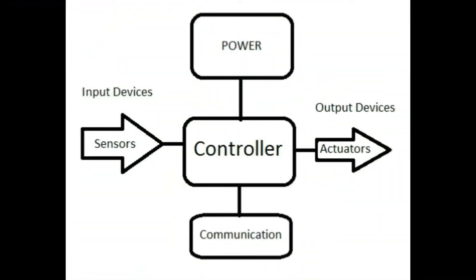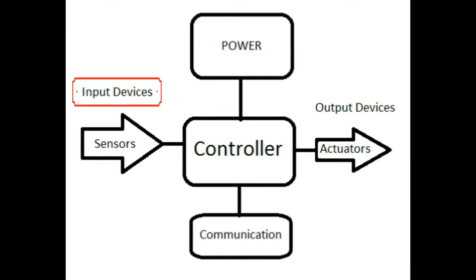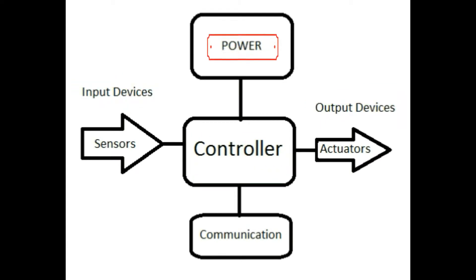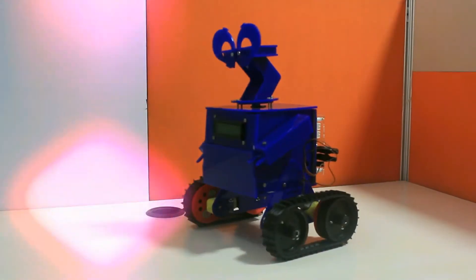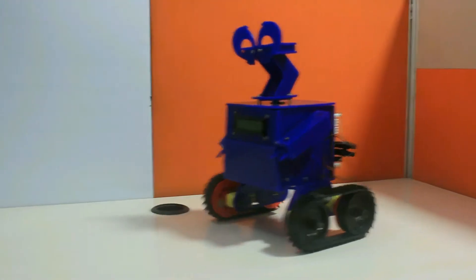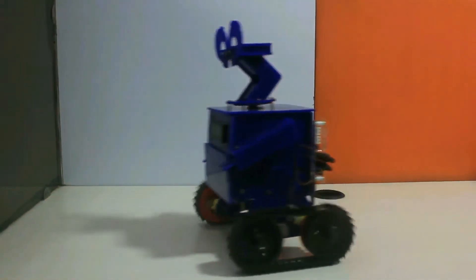The typical parts of a robotics system can be described using a block diagram: Controller, Input devices, Output devices, Power, and Communication. With the advent of the internet, some robots may take instructions, commands, and data over the internet for operations.